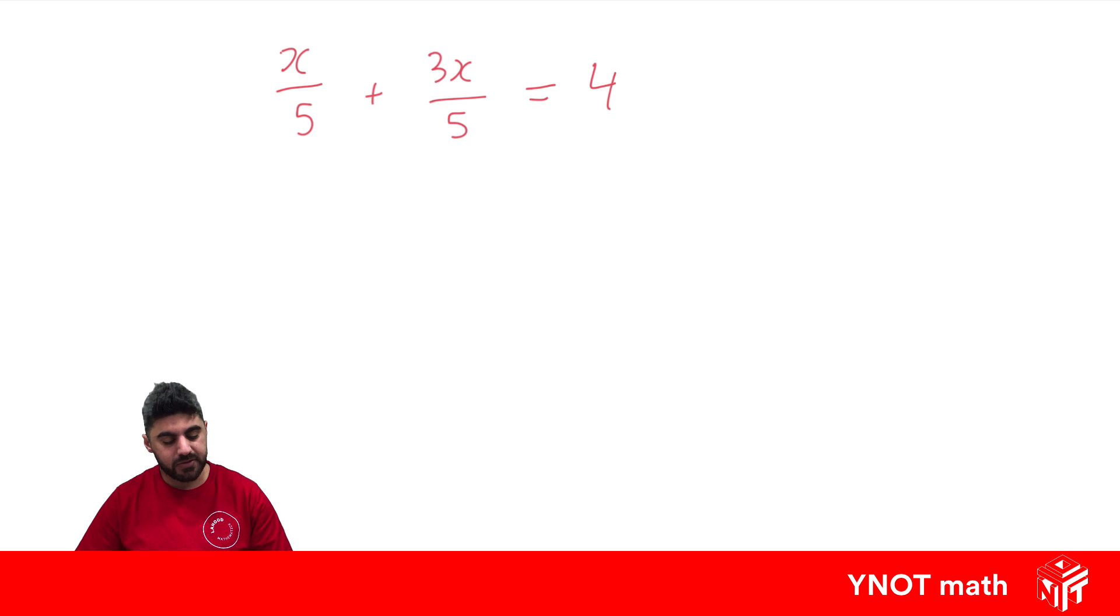Well that means we can add them together and we just add the numerators together. So let's do that and we keep the denominator the same. Okay, so denominator stays the same and now what is x plus 3x? Well they're like terms. Remember that's a 1x. 1x plus 3x is going to give us 4x over 5.